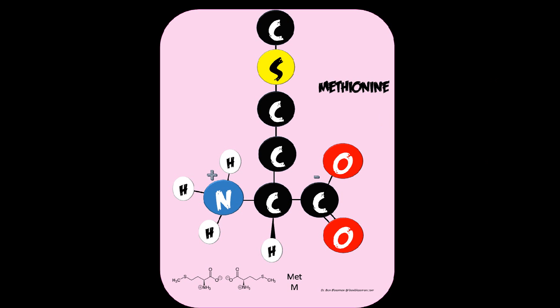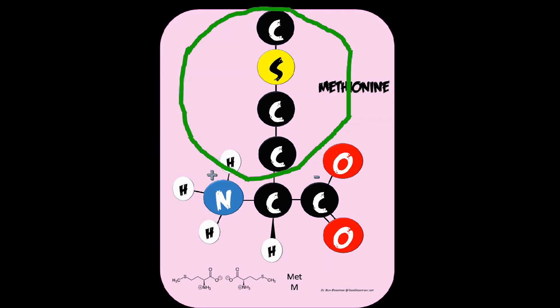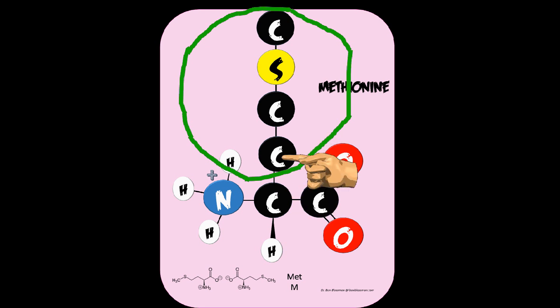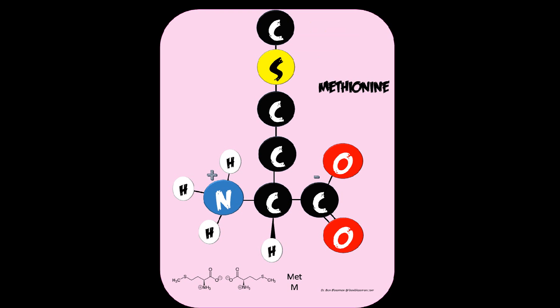Thus far, the hydrophobic amino acid R-chains have only had carbon and hydrogen. But methionine actually does have a sulfur in it, yet we still consider it to be a hydrophobic amino acid. In the R-chain, we have C-beta, then C-gamma, then a sulfur group attached to C-gamma, followed by a methyl group on the sulfur. Methionine and cysteine are the two amino acids that contain sulfur, but in terms of how methionine acts in a protein, we group it with the hydrophobic group.